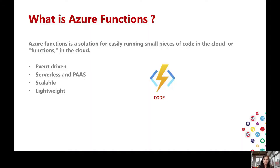So what is Azure Function? Let's start with — what is a function? Most of us know what a function is because we have used them in database languages like SQL or Oracle, or in languages like C#, Java, or Python. A function is a small piece of code that is lightweight and independently executed. So we can say that Azure Function is a function on the cloud — a small piece of code in the cloud.